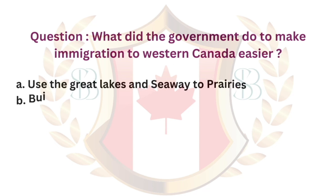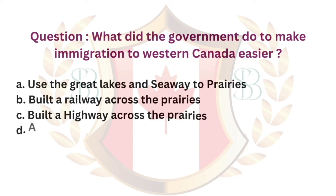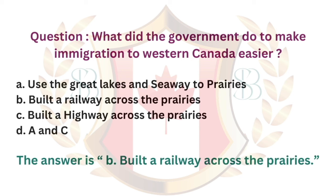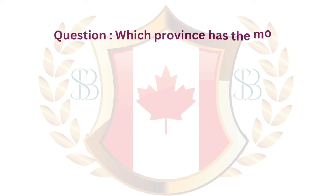Question. What did the government do to make immigration to Western Canada easier? a. Use the Great Lakes and Seaway to Prairies. b. Built a railway across the prairies. c. Built a highway across the prairies. d. A and C. The answer is b. Built a railway across the prairies.